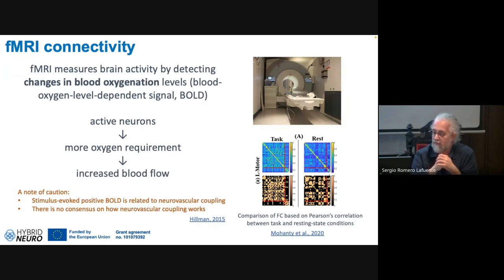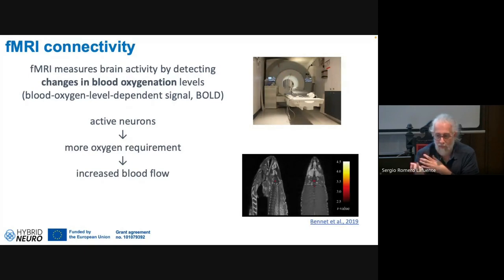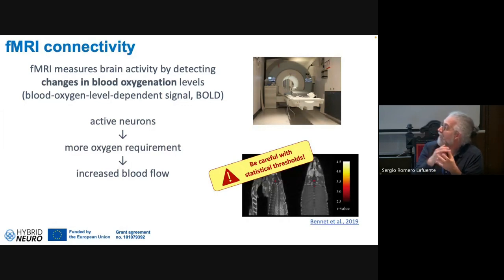A classic example of the statistical pitfalls involved is the dead salmon fMRI study. The author struggled to get it published because no serious journal believed a dead salmon could show brain activity — but the whole point was about statistics. The problem isn't seeing a red spot in the salmon's brain; the problem is that someone missed the statistical threshold to consider that activity real. Obviously, a dead salmon has no active neurons demanding oxygen.